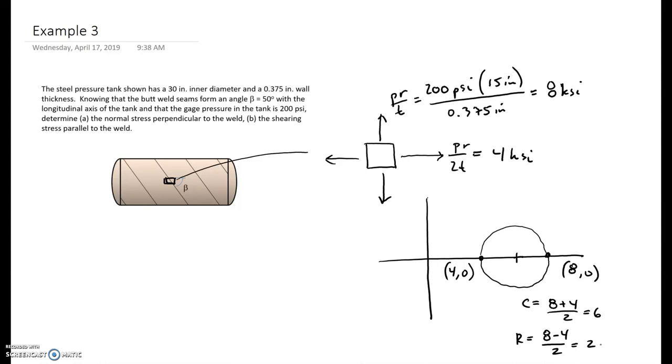Center is pretty easy to find. It's just the average of 4 and 8. So the center is 8 plus 4 divided by 2 is 6. And the radius is equally as easy. It's just the diameter divided by 2. So in this case, 8 minus 4 divided by 2 is 2. Now that I have the center and I have the radius, I can transform this into just about anything, any orientation I want.